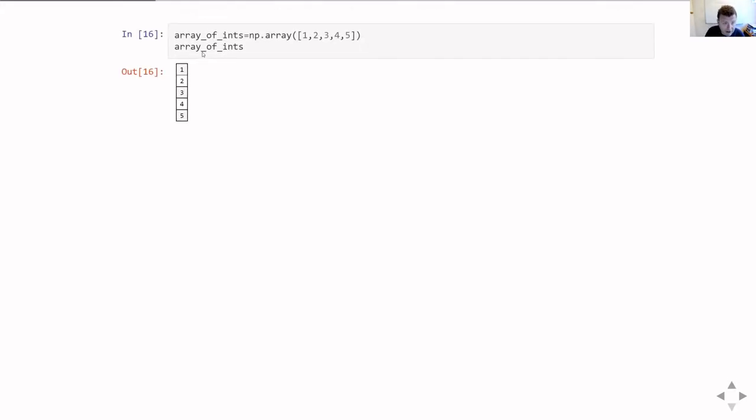The simplest way to make a numpy array from a list of items is using the array function. If you import numpy as np, then you can just do np.array and give it a list or some sequence of values and it'll turn it into an array. In this case we've created an array of integers by feeding it a set of five integers in the list.